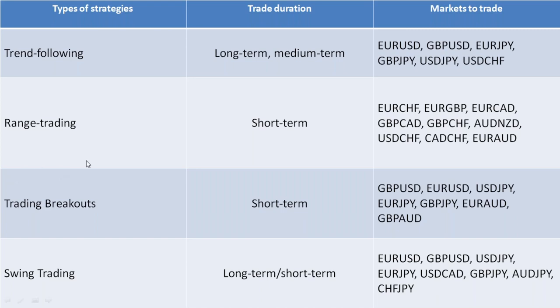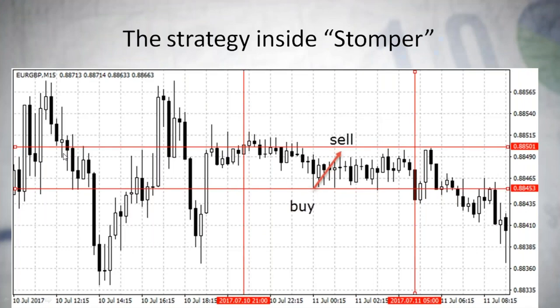The first strategy we are going to explore is Stomper, which you already know. The strategy inside this expert is quite easy: it draws a side channel. If the price touches the lower bound of the channel, it opens a buy; if the price touches the upper bound, it opens a sell. Of course there are stop-loss and take profit, but usually the strategy closes the position with a smaller profit.